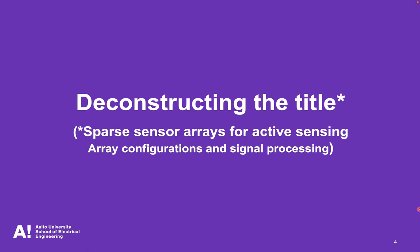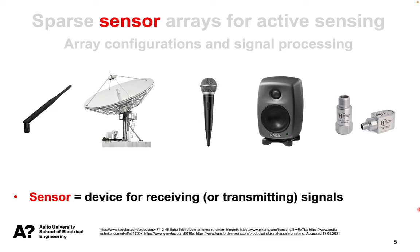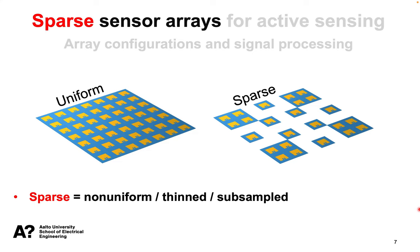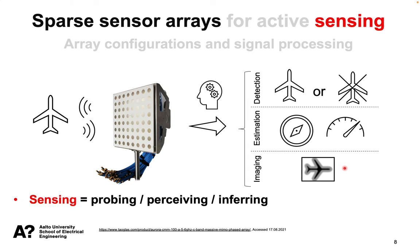Let's briefly go over the title — it's a bit of a mouthful. By a sensor I mean some device for either transmitting, receiving, or both signals, used to probe and measure the environment. Examples include antennas, microphones, and accelerometers. An array of sensors is a spatial collection of such devices, and in particular what I mean by a sensor array is sensors working phase-coherently — synchronized with each other so we can form spatial beams, something called beamforming. By sparse sensor array I mean a thinned or non-uniformly sampled sensor array, where we drop out some elements from a uniform grid.